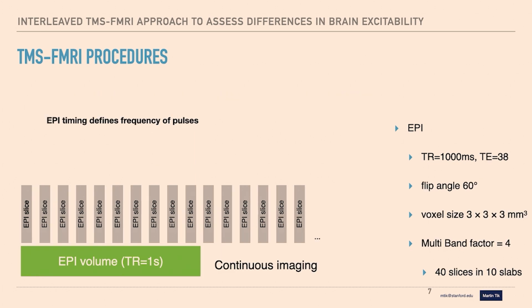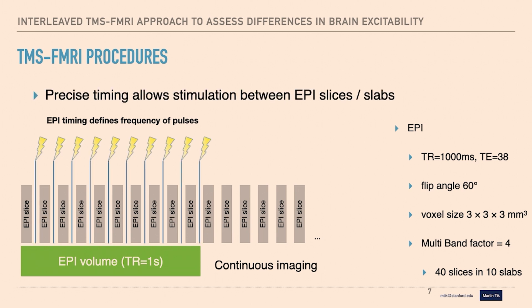We basically stimulate between volumes. Another approach more relevant for the chronometric design — if you want to implement clinical protocols inside the scanner — is EPI timing, where the EPI actually triggers stimulation to happen between the individual acquired slices. In that case, the imaging repetition rate defines the stimulation protocol: with a TR of one second and using multi-band factor of four to acquire 40 slices, we get 10 triggers resulting in 10 Hz stimulation throughout the whole procedure without artifacts. This also allows implementation of theta burst stimulation.